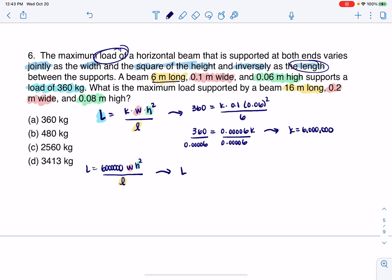So L would equal 6 million, and I'm going to go ahead and put 0.2 here, and then 0.08, I've got to square it though, don't forget that. And then I'm going to divide by 16. Once I do that, I get 480, and my units would be kilograms. So there is my answer. All right, thanks so much everyone.